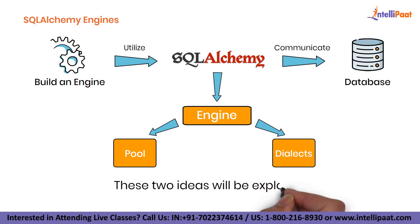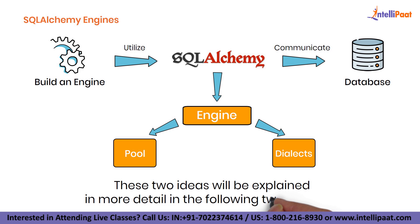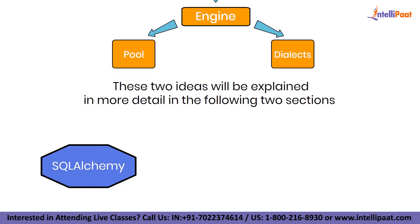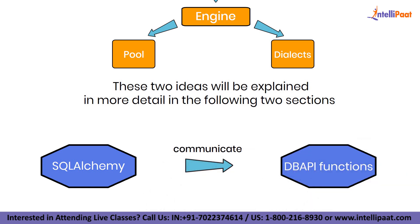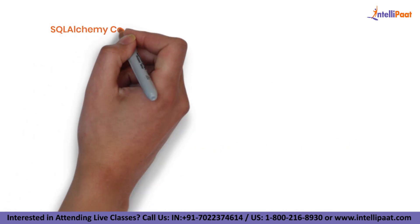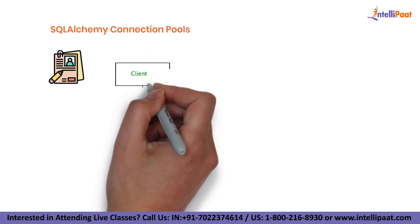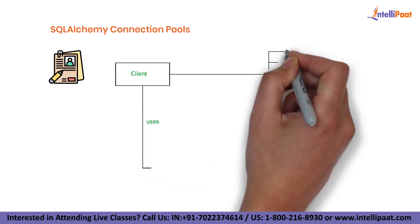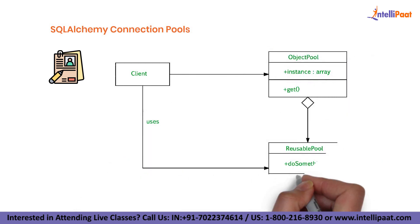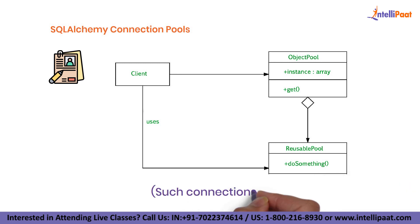These two ideas will be explained in more detail in the following sections, but for the time being, it is sufficient to know that SQL Alchemy uses them to communicate with DBAPI functions. Then we have SQL Alchemy connection pools. One of the earliest applications of the object pool design is connection pooling. Caches of ready-to-use pre-initialized objects are what object pools are used for. The software retrieves an existing object from the pool, uses it as needed, and then returns it after usage rather than spending time creating things that are frequently needed.